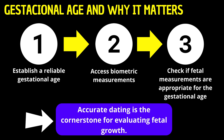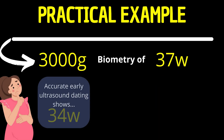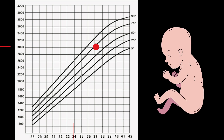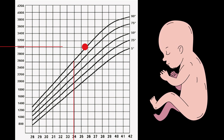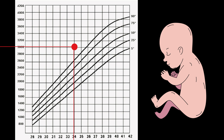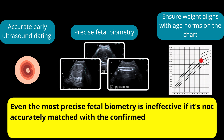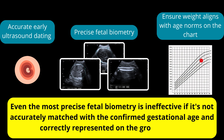Consider a scenario where a fetus is measured with a weight of 3000 grams, and biometry places the gestation at 37 weeks. However, if accurate early ultrasound dating instead indicates that the pregnancy is only 34 weeks along, this suggests the fetus is larger than average for its age. This requires further evaluation and careful monitoring due to potential delivery complications and underlying health issues such as gestational diabetes. Even the most precise fetal biometry is ineffective if not accurately matched with confirmed gestational age and correctly represented on the growth chart.